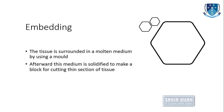Embedding tissue is the process in which tissue is surrounded by a molten medium, usually paraffin wax, by using a mold. After this, the medium is solidified and a block is formed. This block is then forwarded to the microtome section for cutting thin sections of the tissue.